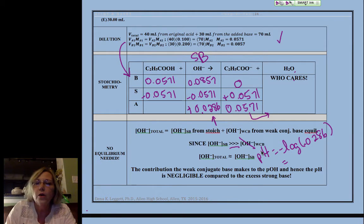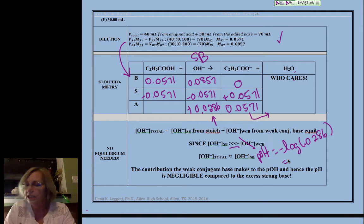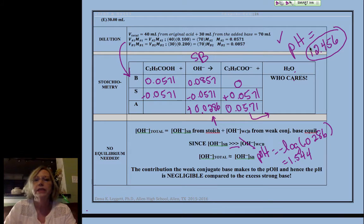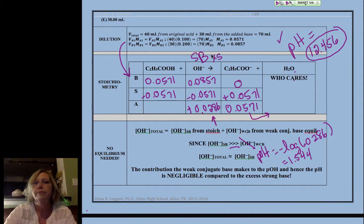That's going to give us a pOH, excuse me, pOH equal to 1.5444, and a pH, and that's what's critical, our pH equal to 12.456. Completely driven by that excess strong base.